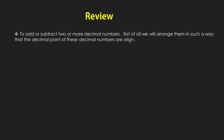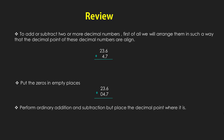Now students, let's review the lesson. To add or subtract two or more decimal numbers: first, arrange them in such a way that the decimal points are aligned — for example, 23.6 and 4.7. Put zeros in the empty places so the decimals become like decimals. Then perform ordinary addition or subtraction, but place the decimal point where it is.